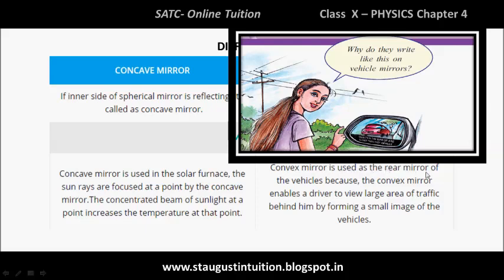The convex mirror enables a driver to view a large area of traffic behind him by forming a small image of vehicles. It provides a larger field of view than other mirrors, which is why it is preferred for rear-view mirrors.